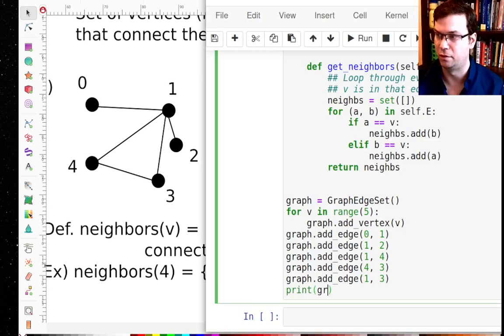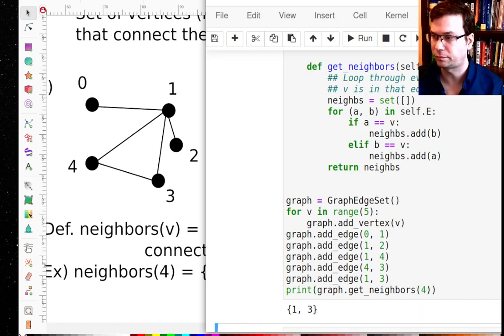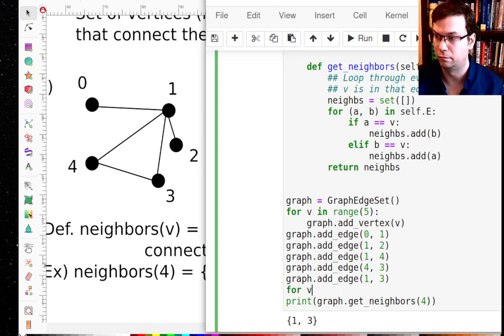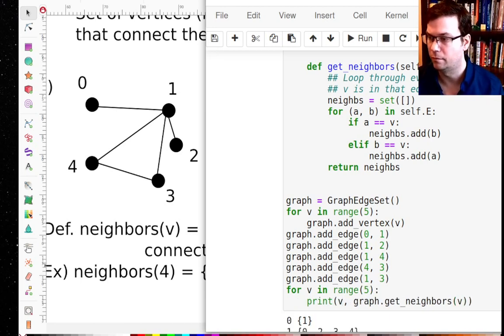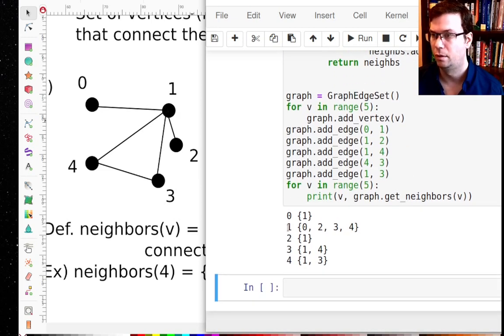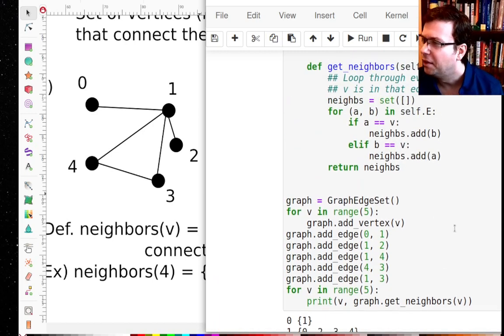I told you a moment ago that the neighbors of four were one and three. Let's just see if that's the case. I'll say graph.get_neighbors of four. I get one and three. Great. And I'll just go ahead and maybe loop through all of them here and just print out what the neighbors are. So I'll print the graph.get_neighbors V. So zero has one neighbor, one. One has actually a bunch of neighbors connected to everything else. Two has only one neighbor, which is one. Three has two neighbors, four and one. And four has two neighbors, three and one.